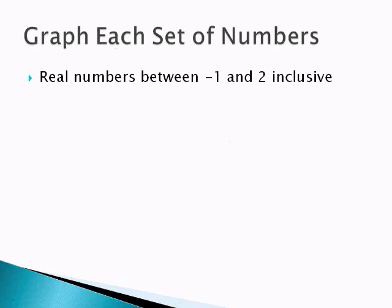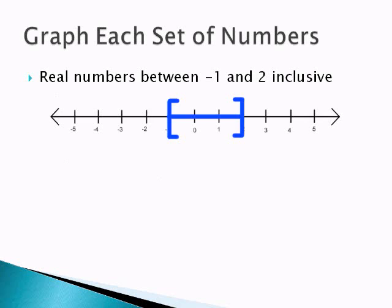Next thing I want to touch on is graphing a set of numbers. If I wanted to graph the real numbers between negative 1 and 2 inclusive, we're going to have a number line where there's a line over the points negative 1 through 2. And to show inclusive, meaning I can include the numbers negative 1 and 2, we're going to use a square bracket.